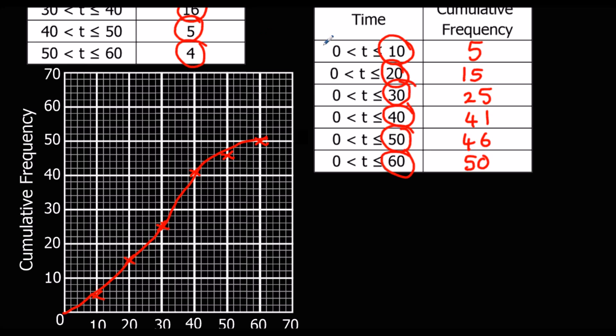And then they could ask us questions like finding the median from here. So if there's 50 people, 50 numbers on our graph, the median is halfway. So the median would be 25. So what we'd be looking for is the 25th person. We'll go along to there and go down. So the median in this case is 30.